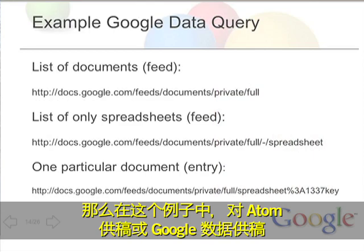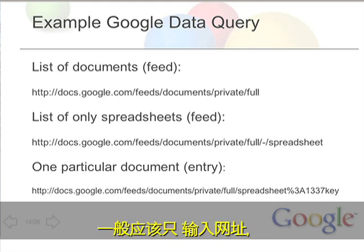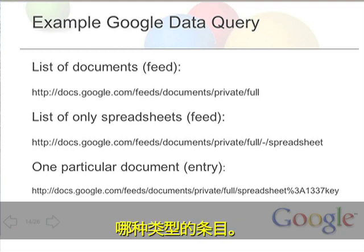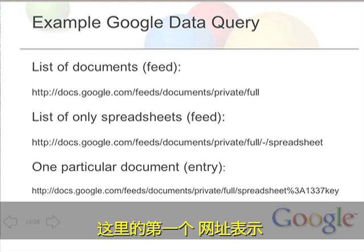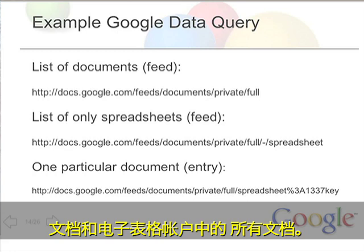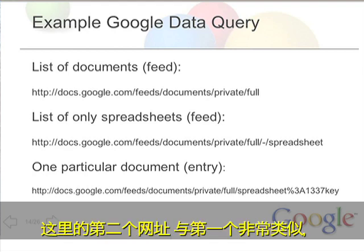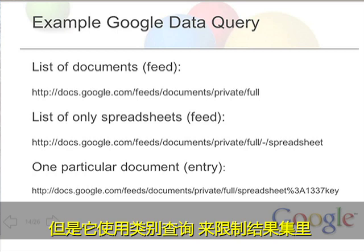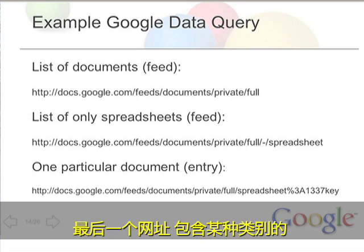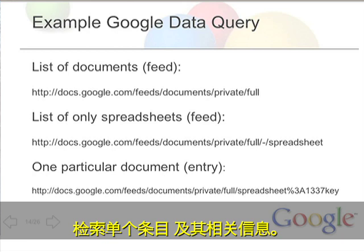When we're making a query on a Google Data feed, it's basically just a URL that contains enough information to tell us what kinds of entries to expect. Here we have a URL that describes all of the documents in someone's Docs and Spreadsheets account. But maybe all we really care about is what spreadsheets they have — so the second URL is very similar to the first, but uses a category query to restrict only the spreadsheet document types in the result set. And lastly, we can retrieve just each individual entry by passing a URL that contains some sort of document key.